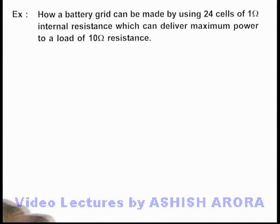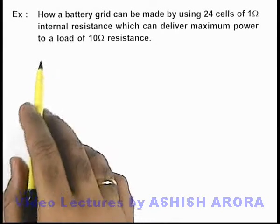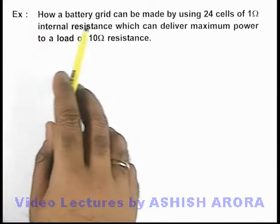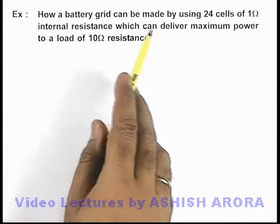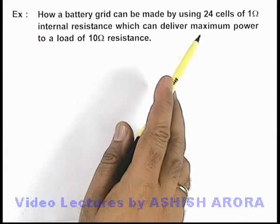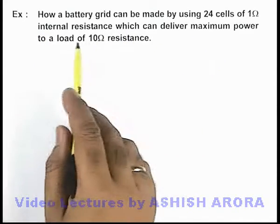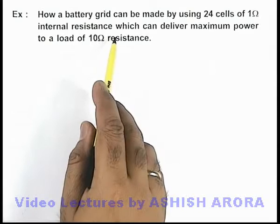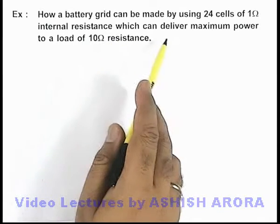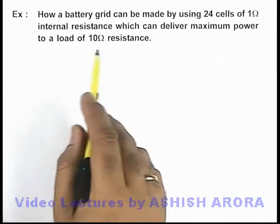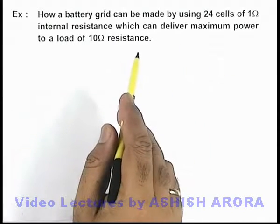In this example, we are required to find how a battery grid can be made by using 24 cells of 1 ohm internal resistance each, which can deliver maximum power to a load of 10 ohm resistance.